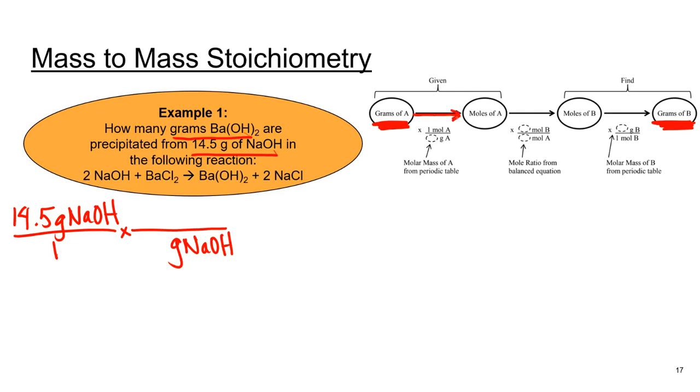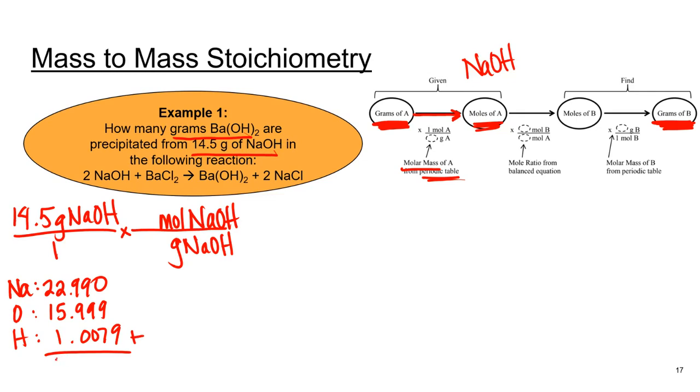I want to get from grams of sodium hydroxide to moles of sodium hydroxide. That's my compound A. To get to moles of sodium hydroxide, I need to know the molar mass from the periodic table. So I'm going to add up the molar masses of sodium, oxygen, and hydrogen. If I add those up, I get a total mass of 39.9969 grams per mole. Grams of sodium hydroxide cancel out in the numerator and denominator. And now I'm going to bring down moles of sodium hydroxide.